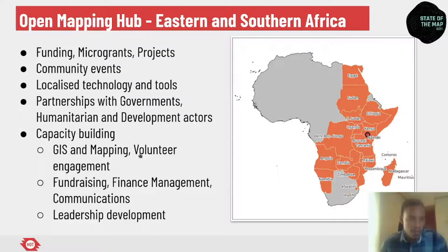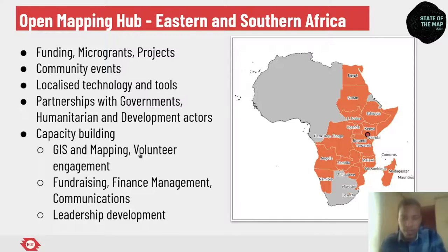Most importantly, the hubs will invest in capacity building — not only in GIS and mapping, but in volunteer engagement, fundraising, finance management, communications, and leadership development. Many of these skills already exist in some communities, so the goal is to invest in peer-to-peer learning to facilitate knowledge exchange between communities. If you're an OSM community member or contributor from any of these countries, we'd really like to connect and work together to grow OpenStreetMap in the region.